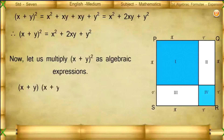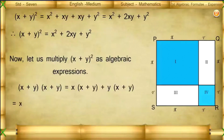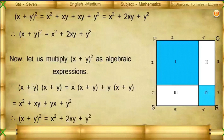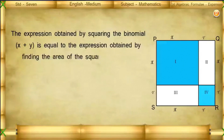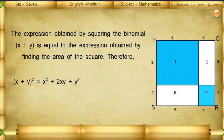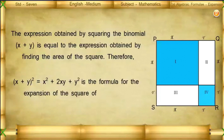(x + y) × (x + y) = x(x + y) + y(x + y) = x² + xy + yx + y². Therefore, (x + y)² = x² + 2xy + y². The expression obtained by squaring the binomial (x + y) equals the expression obtained by finding the area of the square. Therefore, (x + y)² = x² + 2xy + y² is the formula for the expansion of the square of a binomial.